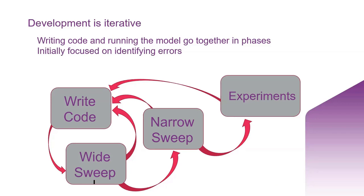When you get the model pretty much the way you want it, you proceed to a wide sweep and then on to maybe more writing code — if your wide sweep shows things aren't the way you want, back to a wide sweep or on to a narrow sweep, and then probably back to writing code, wide sweeps, narrow sweeps. Eventually, when you've gone through the loop several times, on to experiments, at which point you'll probably go back to writing code.